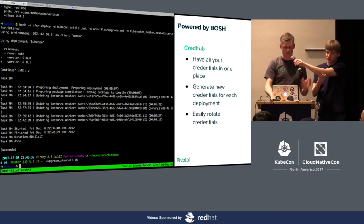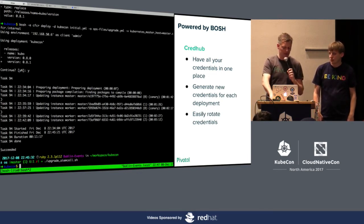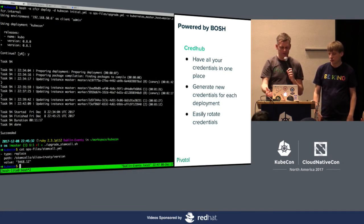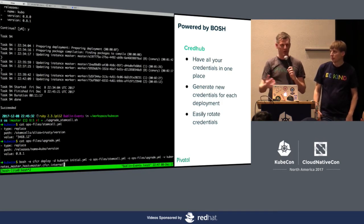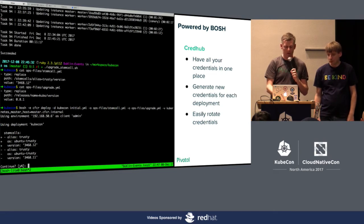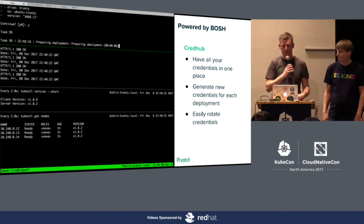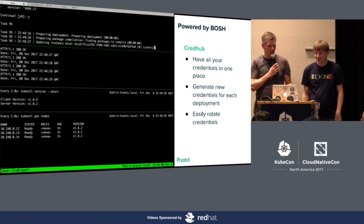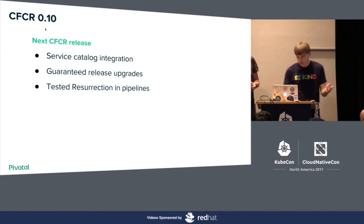We're going to do a very similar process to upgrade the stem cell. As Alexandra mentioned, the stem cell is a base OS image with a 48-hour turnaround agreement — any CVE will be patched within 48 hours, generally managed by Pivotal. We have an operations file here again, which is just changing the version number of the stem cell. I'm applying both the upgrade operations file and the initial deployment YAML. The only change in this deployment is that the stem cell version has been upgraded. BOSH will roll all components of the system with that new OS image version — it shuts down each node and starts it again with the new OS image.